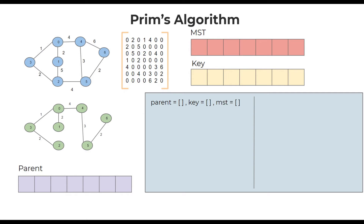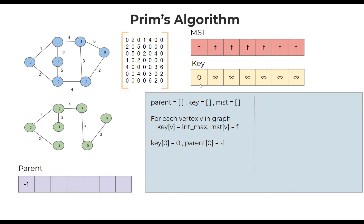We can start with the pseudocode. Initialize three arrays: a parent array, a boolean MST array, and a key array. Initialize the boolean array to all false and the key array to all infinity. Change the key of the 0th vertex to 0 so it gets picked first, and set its parent to minus 1. For each vertex in the graph, look through the key array and pick the minimum value, making sure it hasn't already been picked by checking the boolean table. We pick the vertex only if its boolean value is false — if true, that vertex is already in the spanning tree and should not be picked again.